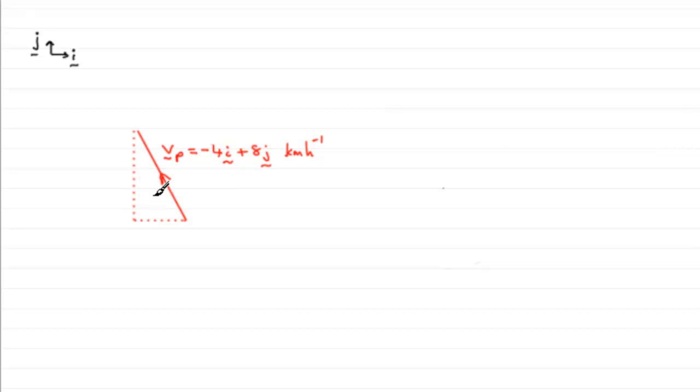And we're asked to calculate the speed of the boat P. And that's represented by the length of this line, the magnitude as we say.